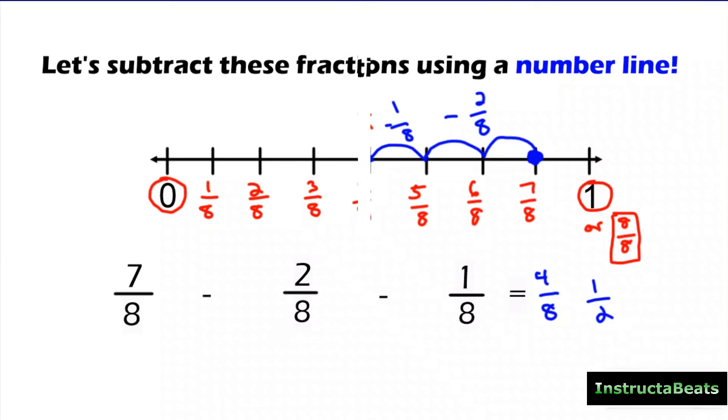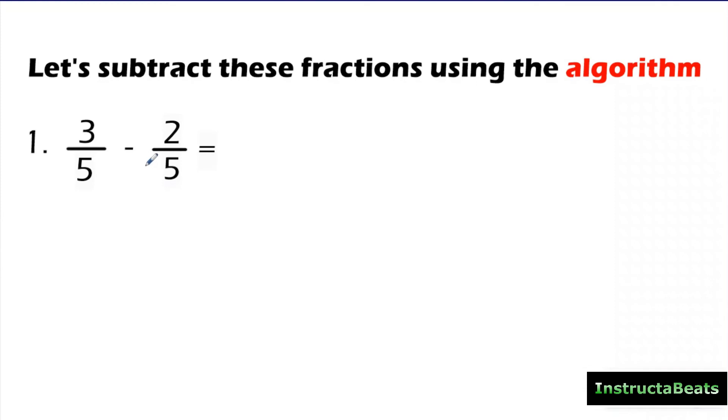So our algorithm, very simple. If the denominators are the same, which they will be in this video, all we have to do is subtract the numerators. So 3 minus 2 is 1. And my denominator stays the same. So 3/5 minus 2/5 is 1/5. Same thing right here. Now my denominators are all 8, so that's good.